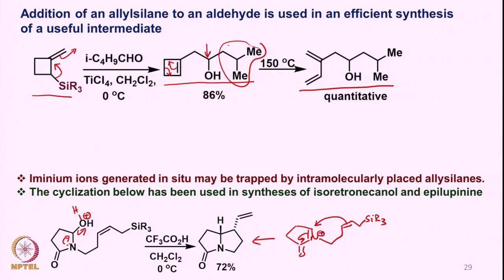Now this particular substrate and another substrate have been converted into natural products. This 5-5 compound has been converted to isoretronicanol, and the 6-membered ring compound has been converted to epilupinene.